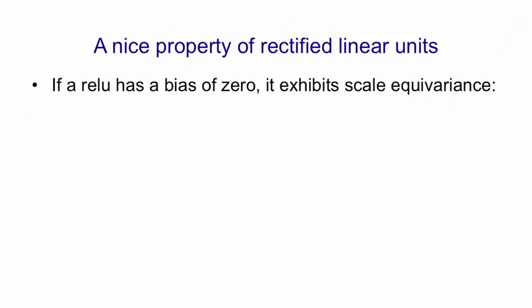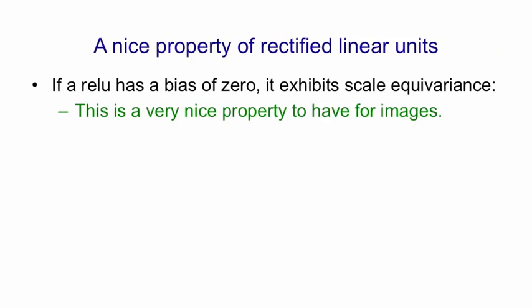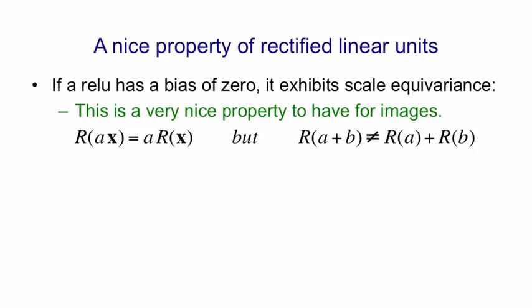One nice property of rectified linear units is that if they have a bias of 0, they exhibit scale equivariance. This is a very nice property to have for images. What scale equivariance means is that if you take an image x, and you multiply all the pixel intensities by a scalar A, then the representation of A x in the rectified linear units will be just A times the representation of x. In other words, when we scale up all the intensities in the image, we scale up the activities of all the hidden units. But all the ratios stay the same. Rectified linear units aren't fully linear because if you add together two images, the representation you get is not the sum of the representations of each image separately.